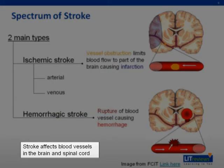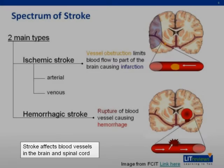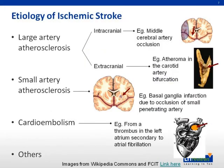Both ischemic and hemorrhagic strokes can occur in the brain or in the spinal cord. The etiology of ischemic stroke can be classified according to the pathologic mechanism involved. The pathology may be related to large vessel disease, which may be extracranial disease involving the common or internal carotid arteries, or intracranial disease involving, for example, the middle cerebral and basilar arteries. Atherosclerosis is the usual underlying pathology causing plaque and thrombus formation, resulting in stenosis or narrowing of the blood vessel lumen.